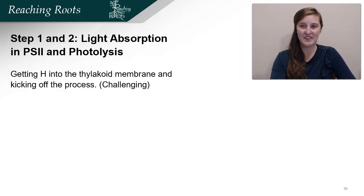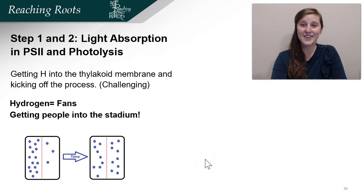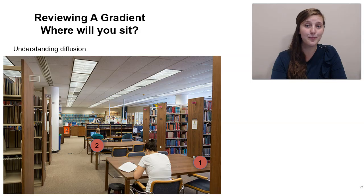In steps one and two of photosynthesis, a huge component is bringing hydrogen from the stroma into the thylakoid interior. For the basketball analogy, that's bringing fans into the stadium. It's a challenge to get all people to come into the stadium at once because, like molecules, people like to diffuse — they like to be spread out. If you walked into a library and didn't know either person there, you'd probably sit in the empty seat. That's because we like to diffuse — think of it as a low concentration gradient.